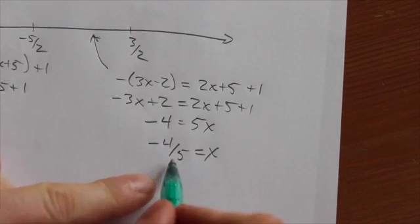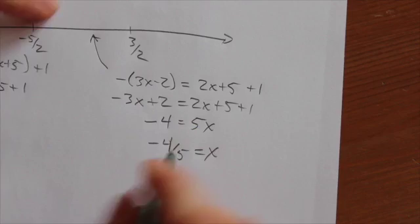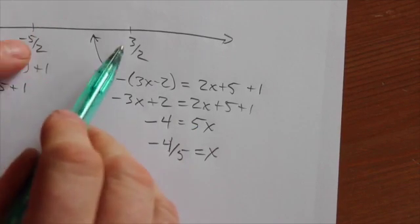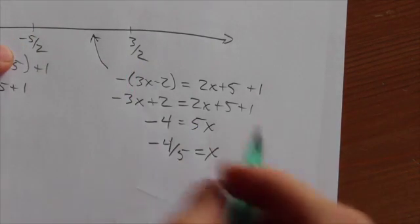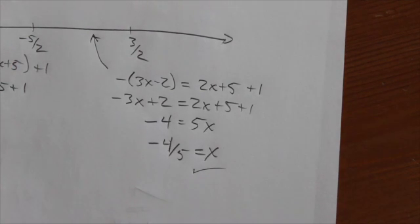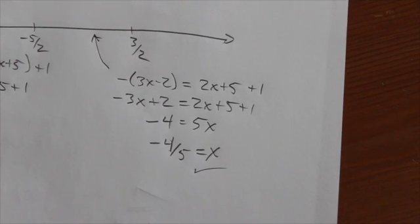It turns out that yes, in fact, negative 4 fifths is in between negative 5 halves and 3 over 2. So that works. So what we're doing here is we can check our work as we go.